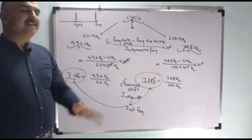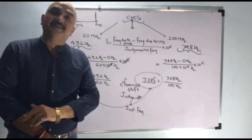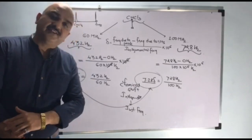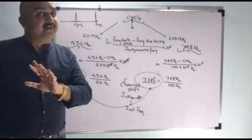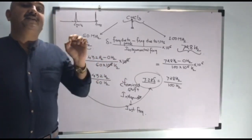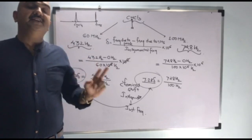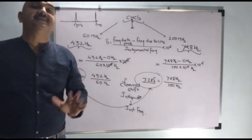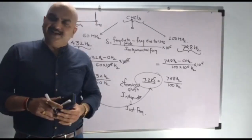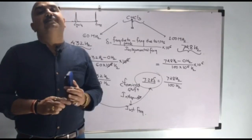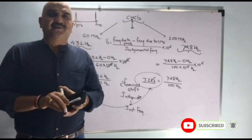To summarize: chemical shift is the separation of a particular peak from the TMS peak, where TMS is the reference standard. If the instrument changes, the value of chemical shift will not change — instrumental frequency and chemical shift are independent. This is the most important property of chemical shift. Please subscribe, press the bell button, share this video and like it.